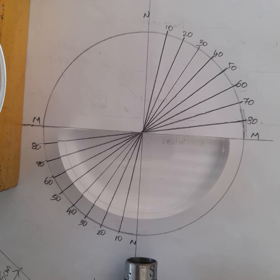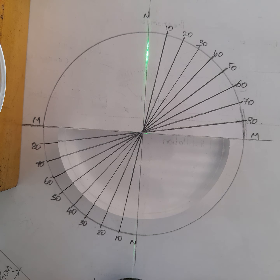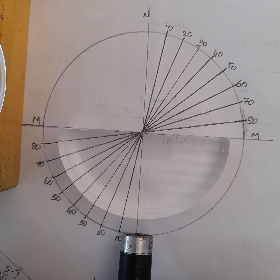Let me send the light rays with an angle of incidence equal to zero, which is along the normal. See what happens — when the angle of incidence is zero in the denser medium, the angle of refraction in the rarer medium is also zero.